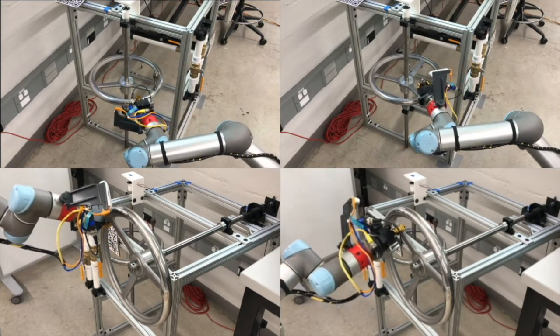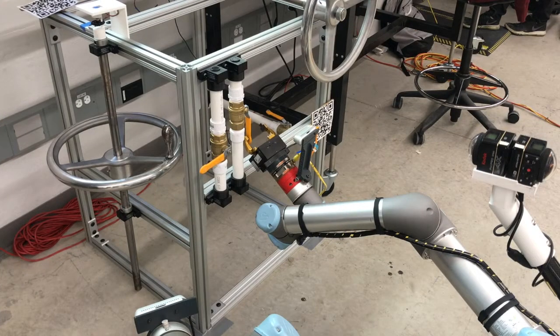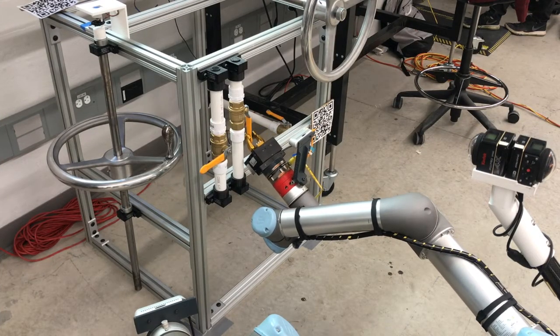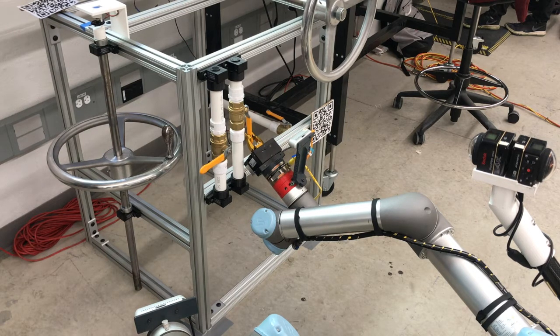Grasp invariance means the manipulator may be able to complete tasks it otherwise could not reach, such as turning this ball valve from the side.